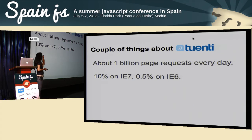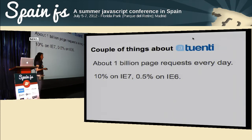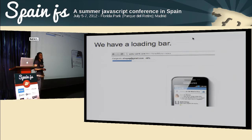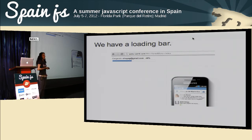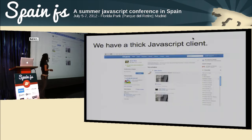For Spanish speakers, a billion means something different — so that's a thousand million page requests every day. As of last year, we still had 0.5% on IE6, but 0.5% of 1 billion is a lot of page views. And 10% on IE7 is a ton of page views. We also had a loading bar — that artifact we all love — which started because we had way too much JavaScript on the client, probably around 2009. Someone put in a loading bar, then added an ad to go with it, and the loading bar was there to stay because the people who sell ads really love it.